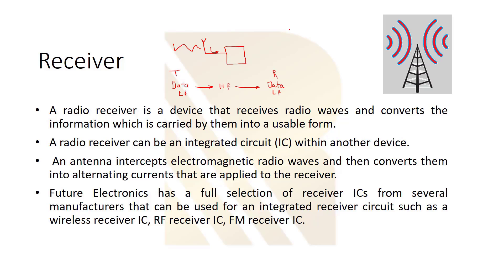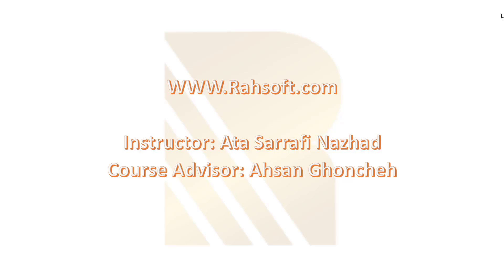To summarize: we have a low-frequency signal which we shift up to high frequency and transmit. When it arrives at the receiver, we shift it back — demodulating or separating the data from the carrier — to recover the original signal.